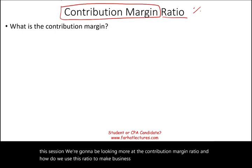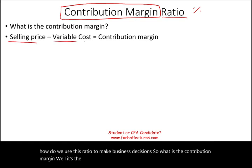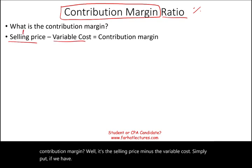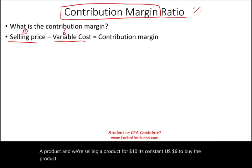So what is the contribution margin? It's the selling price minus the variable cost. Simply put, if we have a product and we're selling it for $10, and it's costing us $6 to buy the product, then $10 minus $6 will give us a contribution margin of $4 per one unit.